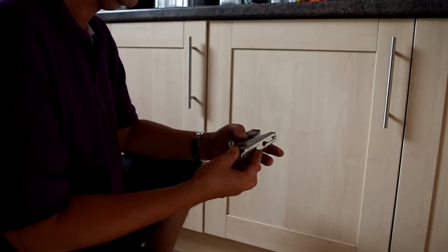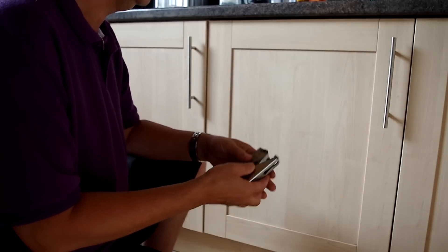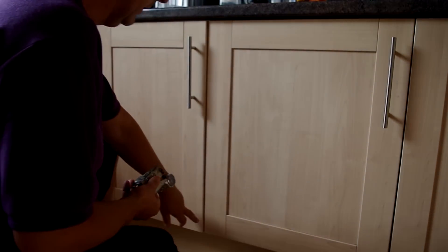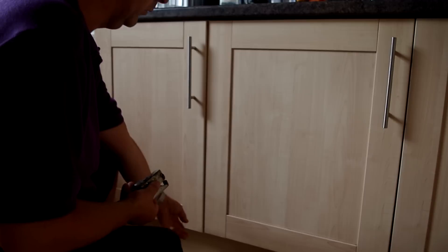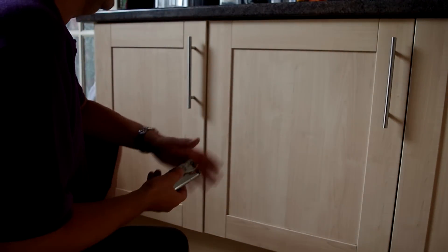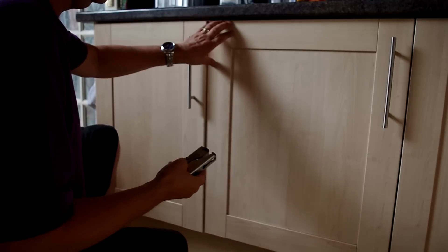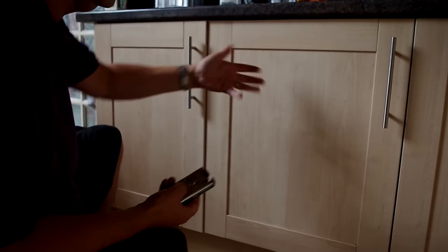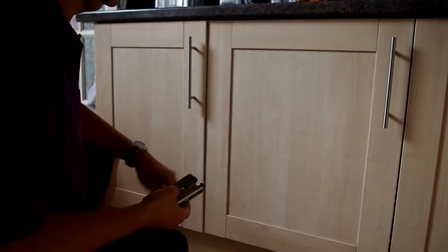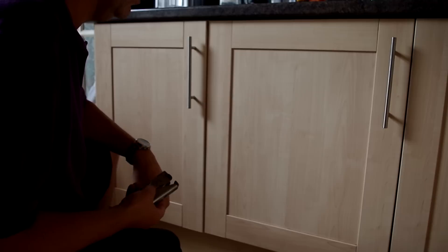This hinge hadn't actually fallen off, but the door wasn't closing properly. When you'd open it, it would catch on the other door, which will eventually wear the other door away, costing more money for new cupboard doors. Once the hinge wears from kids leaning on the door or general wear and tear, the door starts dropping and catches the other doors, causing damage.